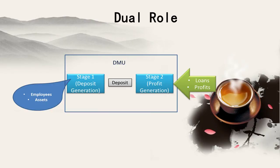This is an example of dual performance metrics. Think about a bank branch: you have employees and assets for the first stage, and they generate deposits. The deposit is an output from the first stage. Now in the second stage, the deposit is used to generate profit and loans. So the deposit becomes an input to the second stage, making it an example of dual role performance metrics.